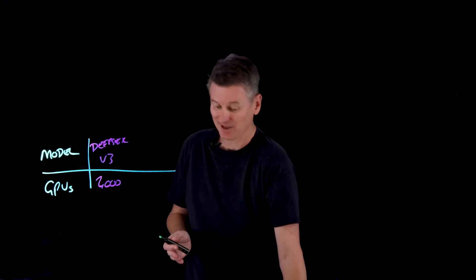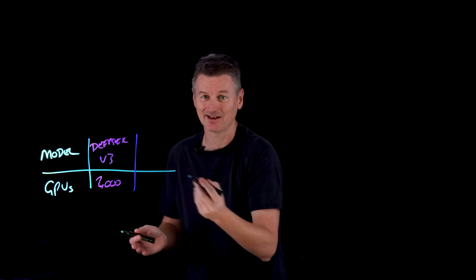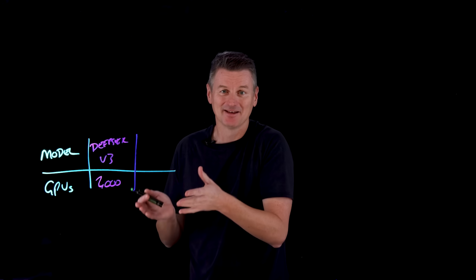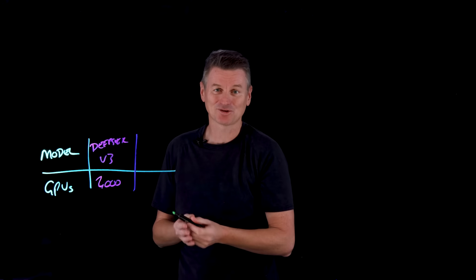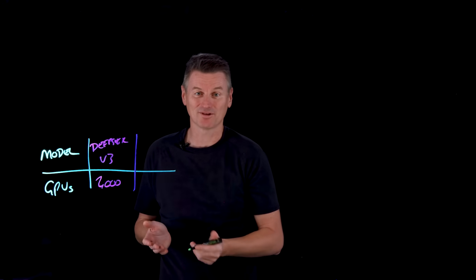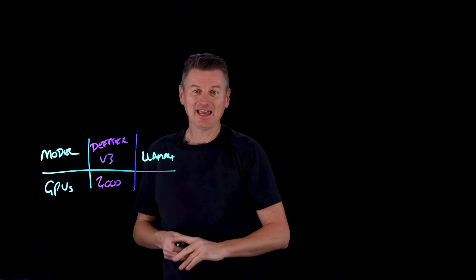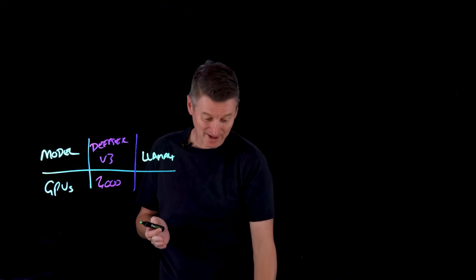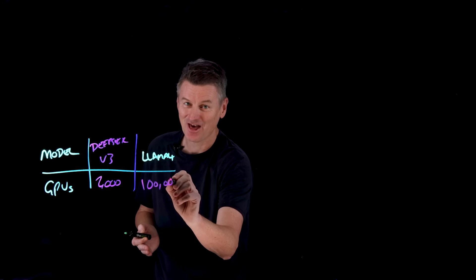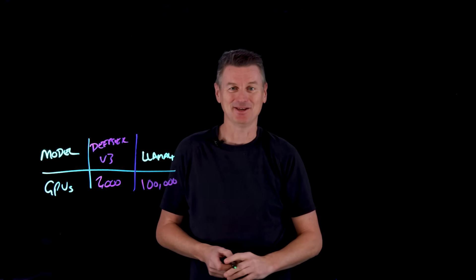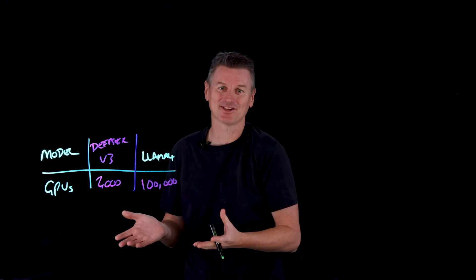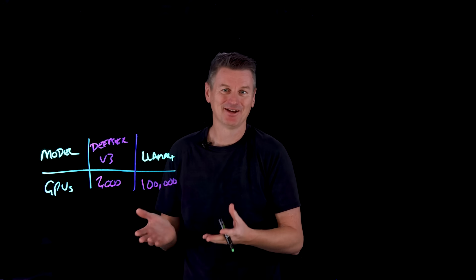Now, in isolation, what does that mean? Is that good? Is that bad? Well, by contrast, Meta said that the company was training their latest open source model, that's Llama 4, and they are using a computer cluster with over 100,000 Nvidia GPUs. So that brings up the question of how is it so efficient?